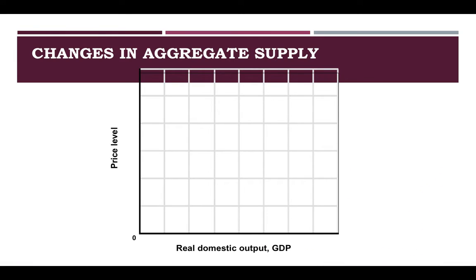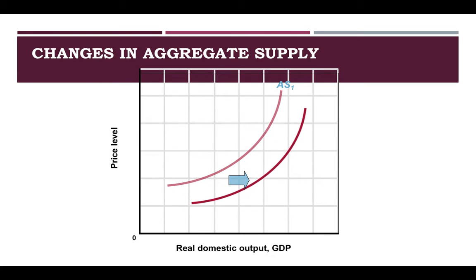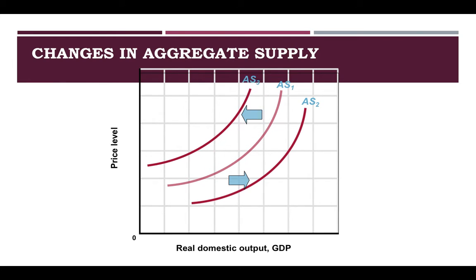Let's look at changes in aggregate supply. We have our upward sloping aggregate supply curve. A shift to the right will increase aggregate supply — and there you see it moving. And conversely, we have a leftward shift shown there. And eventually, we're going to put aggregate supply and aggregate demand together.